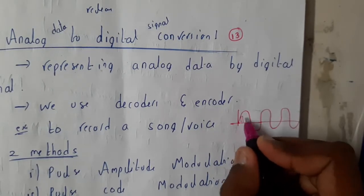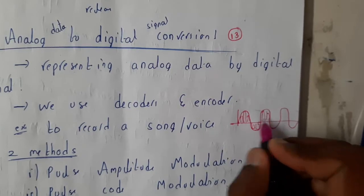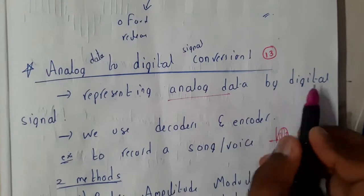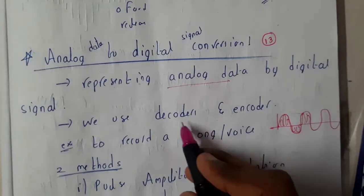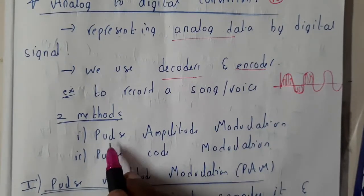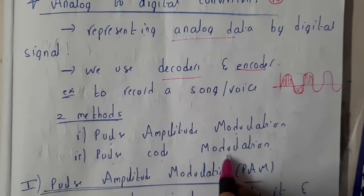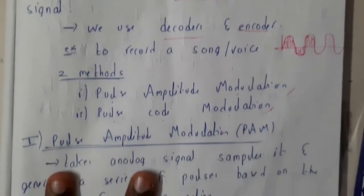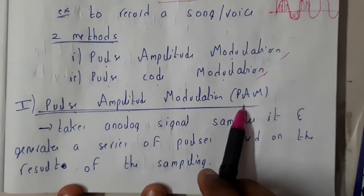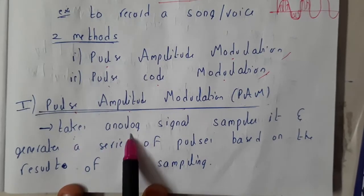To convert it, you will just draw some bars like this, and that could be a digital signal. This is the method in which we will be representing digital data as a digital signal, using decoding and encoding. We will have two methods: the first is Pulse Amplitude Modulation (PAM), and the second is Pulse Code Modulation (PCM).